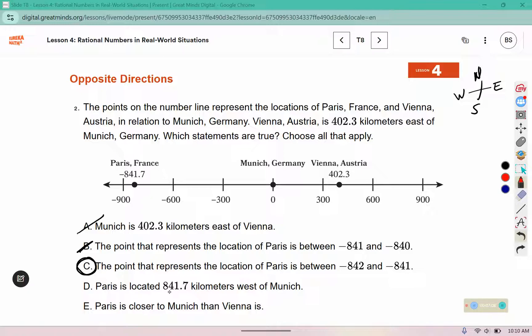Paris is located 841.7 kilometers west of Munich. So here's Munich. If I move to the west, 841.7, do I get to Paris? Yes. And then E.